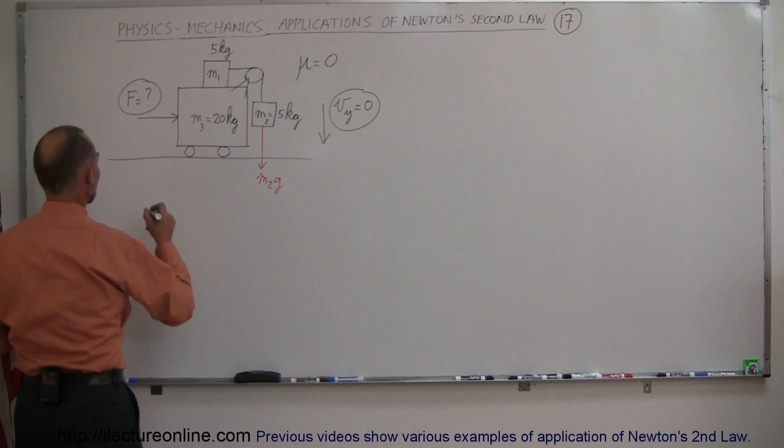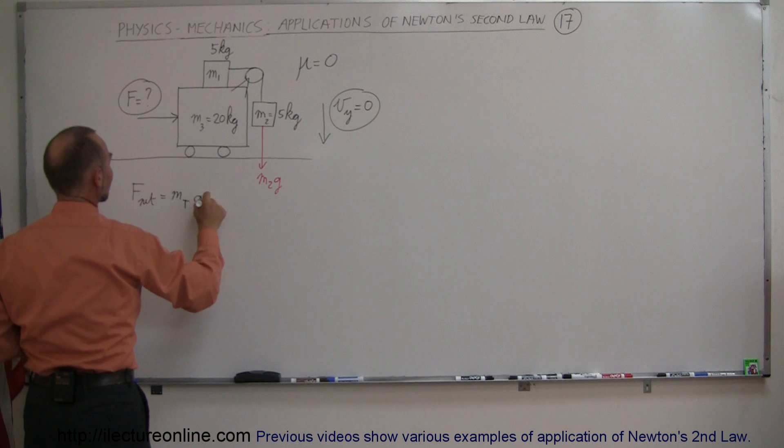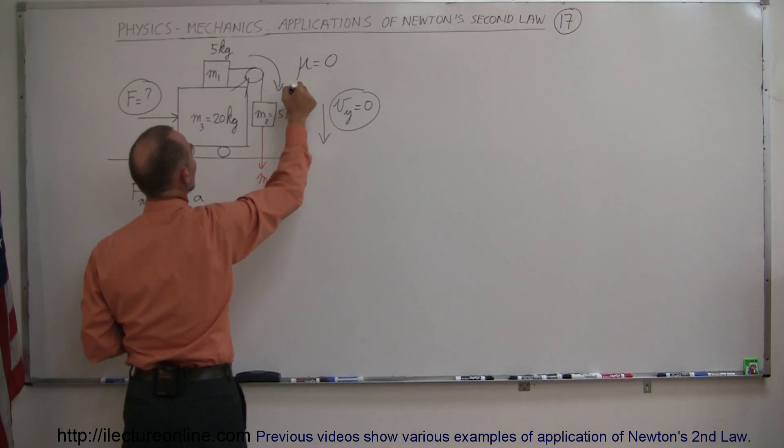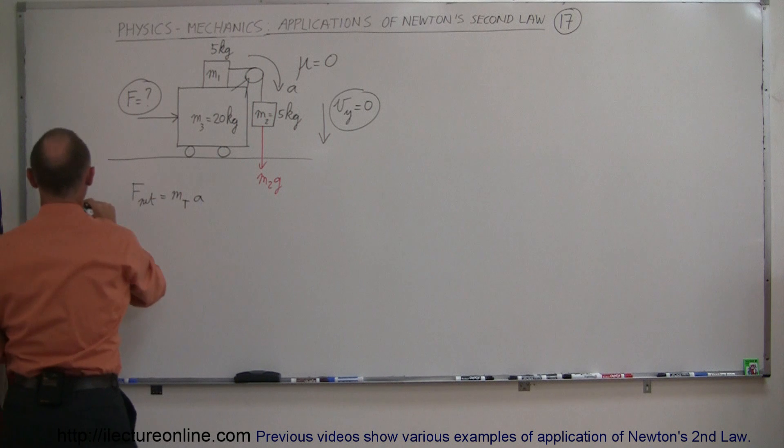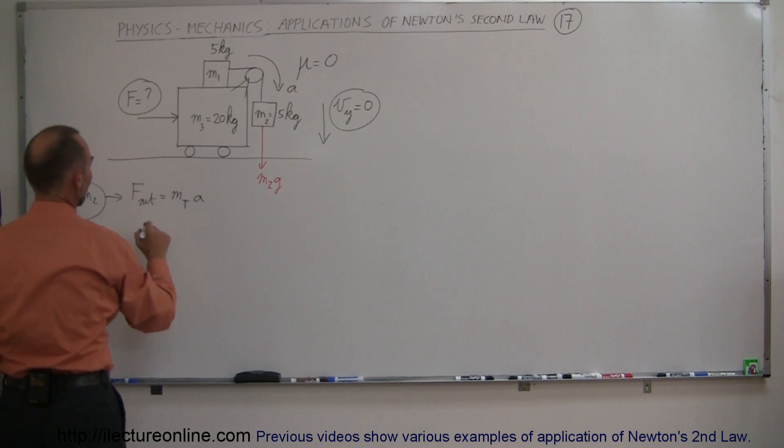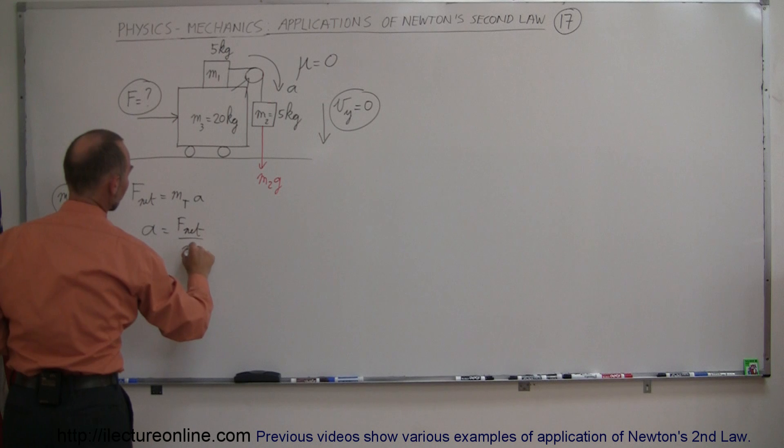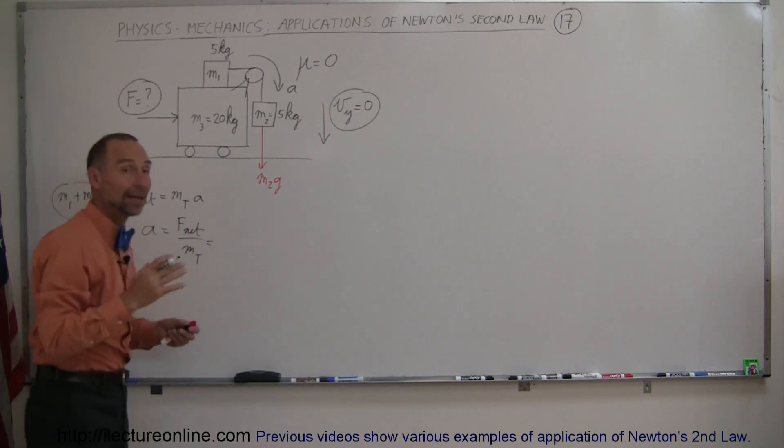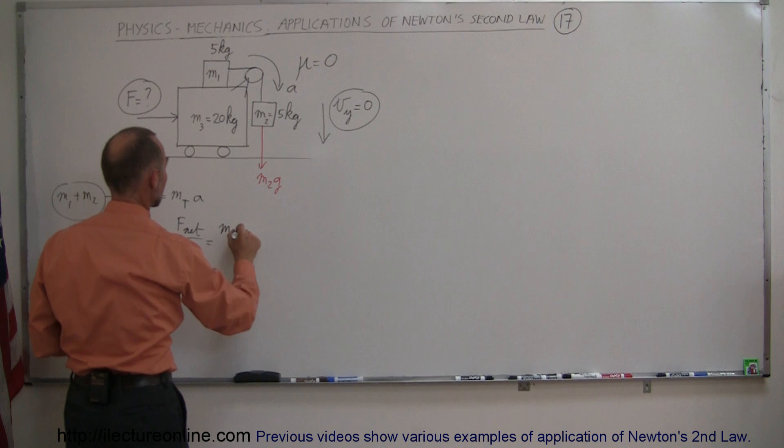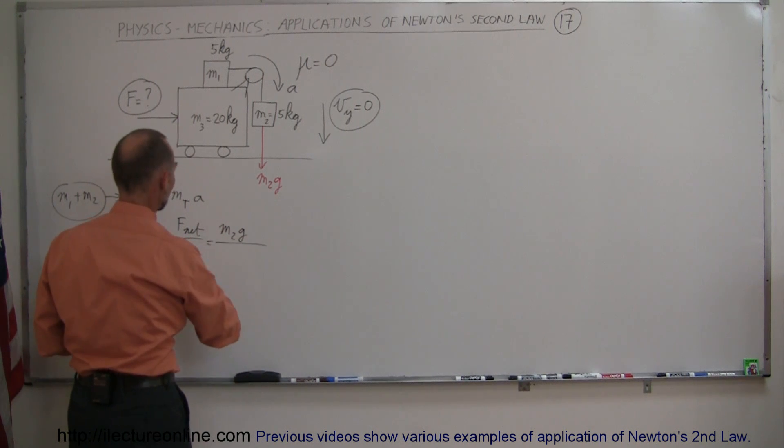So we can then see that F net is equal to M total times acceleration. So we're looking at the acceleration of M2 and M1. So let's do that here. M1 plus M2. To first find acceleration, A is equal to F net divided by mass total, and in the case of M1 and M2 alone the net force would simply be M2G and we divide that by the mass total which is M1 plus M2.